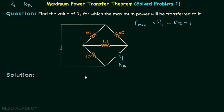To find out RTH we need to find out the equivalent resistance between the two terminals. Before I explain how to find out this resistance, I want you to pause this video and try to find out the resistance on your own. I hope you are done. Now we will understand how to find out the resistance.